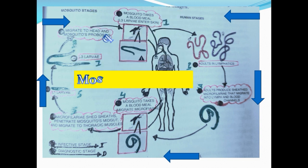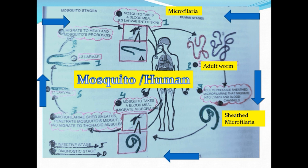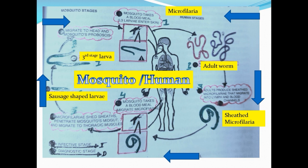Let us understand its life history with the help of this diagram. It has two hosts: mosquito, the secondary host, and human being, the primary host. The infective stage micro filaria is inoculated by the bite of the mosquito into the human being. In the human being they mature into male and female, and after mating they form sheath micro filaria. These are ingested by the mosquito when it bites the infected person. In the mosquito, they undergo metamorphosis, change into sausage-shaped larva, then after molting change into third stage larva, which migrates to the head and mouth parts of the mosquito. The mosquito then injects these to the human being again.